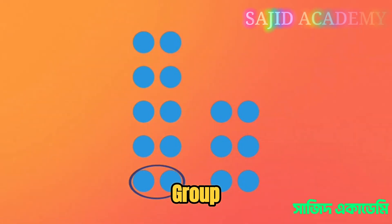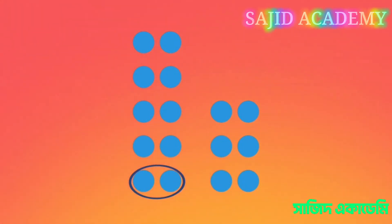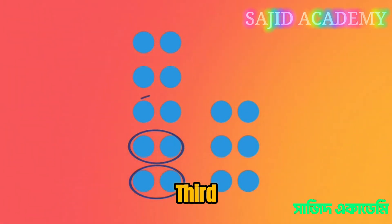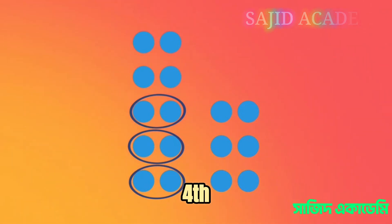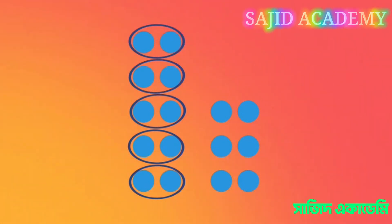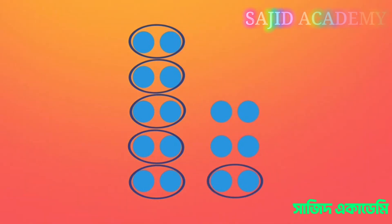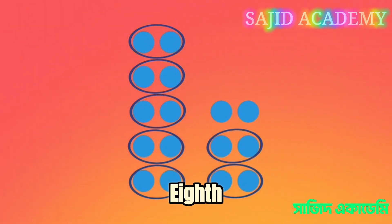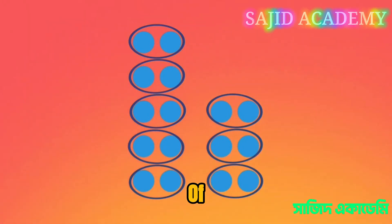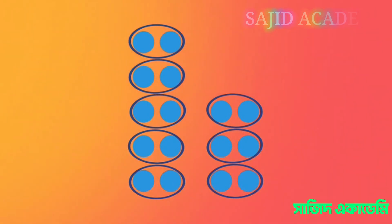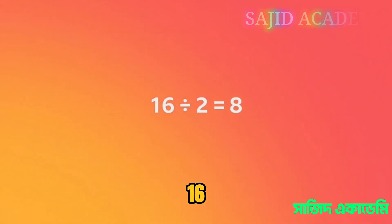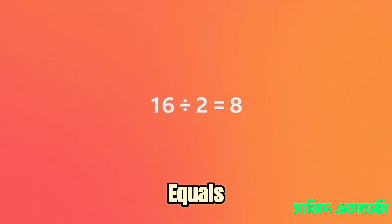Here is 1 group of 2, here is the 2nd group of 2, 3rd, 4th, 5th, 6th, 7th, and 8th group of 2. So there are 8 groups of 2. Well done. Because there are 8 groups of 2, that means 16 divided by 2 equals 8.